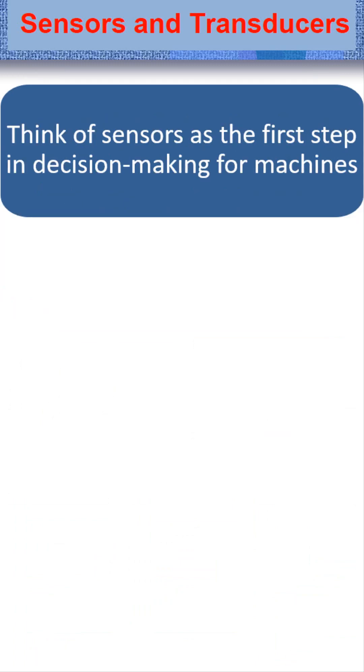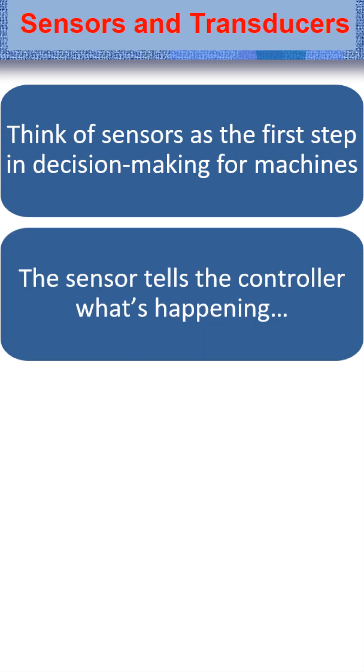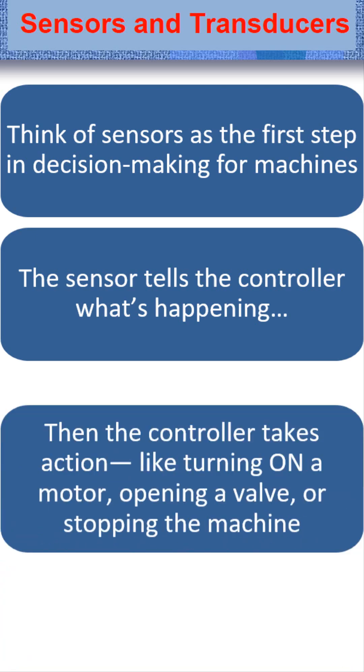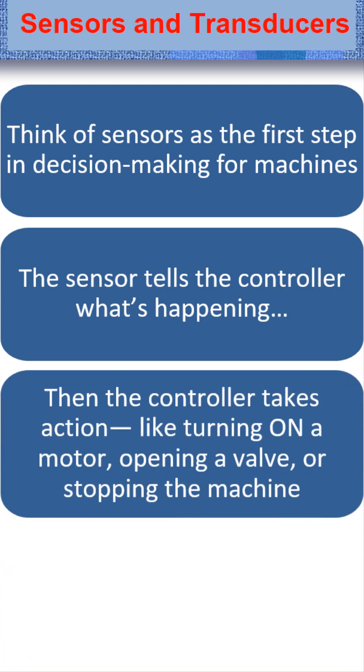Think of sensors as the first step in decision-making for machines. The sensor tells the microcontroller what is happening. Then the controller takes action, like turning on a motor, opening a valve, or stopping the machine.